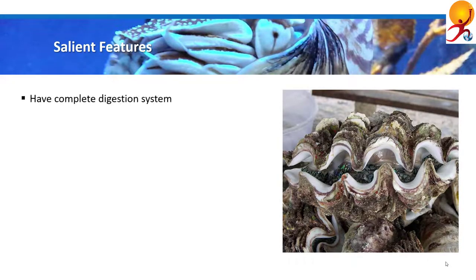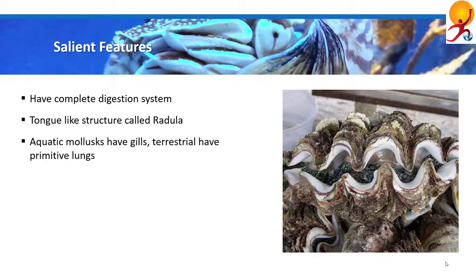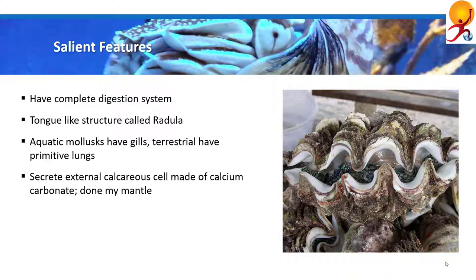Some salient features of molluscs: they have a complete digestive system with mouth and anus, and also have extracellular digestion, which is not found in any phylum below them in taxonomical hierarchy. A few molluscs have a tongue-like structure used to scrape food, called a radula. The study of molluscs is known as malacology. Aquatic molluscs respire through gills, while terrestrial molluscs have a primitive lung. The shell of molluscs — particularly in bivalves and gastropods — is an external calcareous shell made of calcium carbonate, secreted by the mantle, a fold in their epidermis.